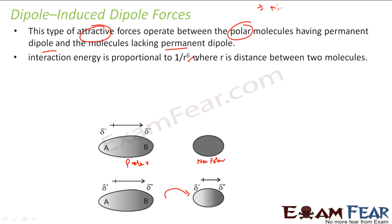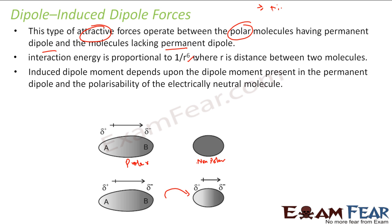So here also interaction energy is proportional to 1 by R6, where R is the distance between two molecules. And here induced dipole depends on, guess what, obviously one thing is the permanent dipole here and the second thing is the polarizability of the neutral molecule.